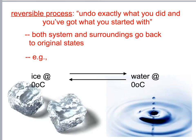We've got to talk about reversible processes. You undo exactly what you did and you've got what you started with. Both the system and the surroundings go back to their original state — for example, changes of state.